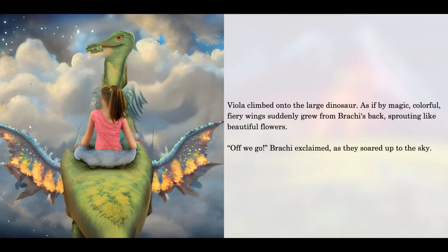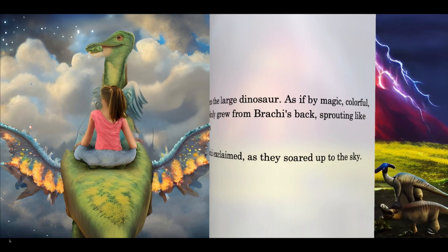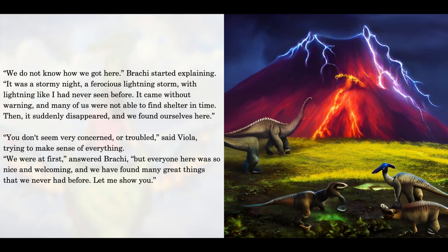As if by magic, colorful, fiery wings suddenly grew from Brachy's back, sprouting like beautiful flowers. "Off we go," Brachy exclaimed, as they soared up to the sky. "We do not know how we got here," Brachy started explaining. "It was a stormy night, a ferocious lightning storm, with lightning like I had never seen before. It came without warning, and many of us were not able to find shelter in time. Then it suddenly disappeared, and we found ourselves here."